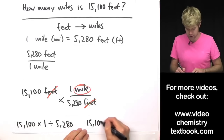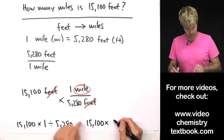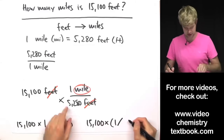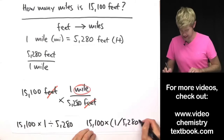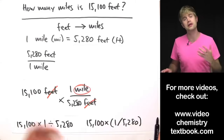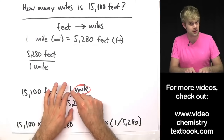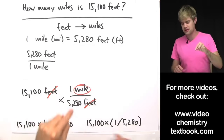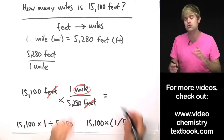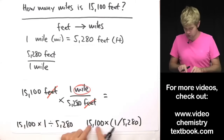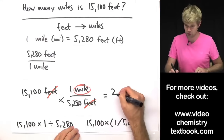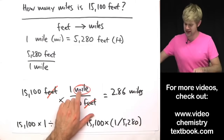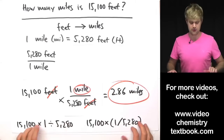For the math, you can plug in 15,100 times (1 divided by 5,280) into your scientific calculator. You might wonder why you keep including the 1 — remember, this won't always be a 1, so it's a good habit to multiply by whatever is on the top of the fraction and divide by whatever is on the bottom. Either way, you'll end up with an answer of 2.86 miles.